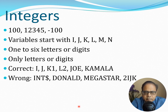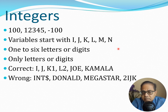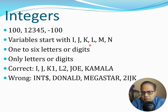Now let us look at the different types of variables. You have integers — typical numbers such as 100, 1, 2, 3, 4, 5, negative 100. In classical Fortran, variables that start with I, J, K, L, M, or N are automatically classified as integers. This makes a lot of sense because in mathematics we always use I, J, K, L, M, N as indices of matrices. Variable names must be 1 to 6 letters or digits, and only letters or digits.